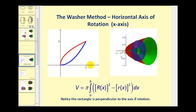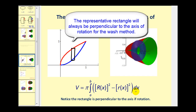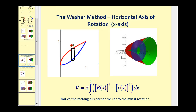To set up this integral, we'll consider one washer formed by rotating a rectangle bounded by the two functions about the x-axis. The width of this rectangle would be delta x, and because the width is delta x, we'll integrate with respect to x. Big R of x is the outer radius, or the distance from the axis of rotation to the outer function. Little r of x is the inner radius, or the distance from the axis of rotation to the inner function.